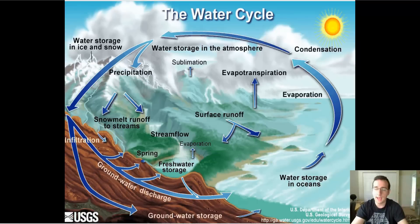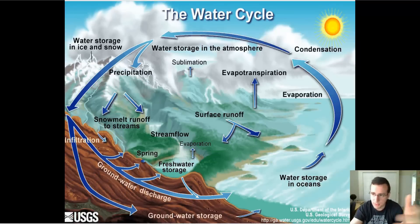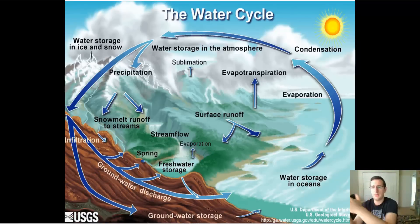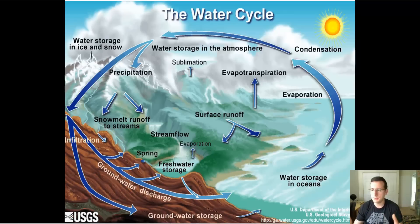When the clouds get very heavy, they will fall down as precipitation, and there are lots of kinds of precipitation — sleet, hail, ice storms, snow, rain, drizzle, glaze ice, dew — lots of different ways by which water exits the atmosphere and goes back into the ground. All of those ways are called precipitation.